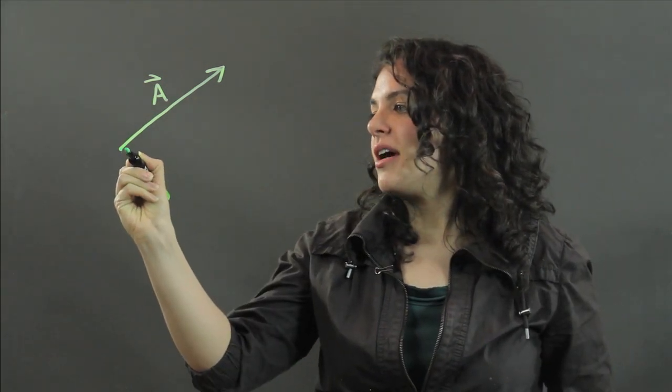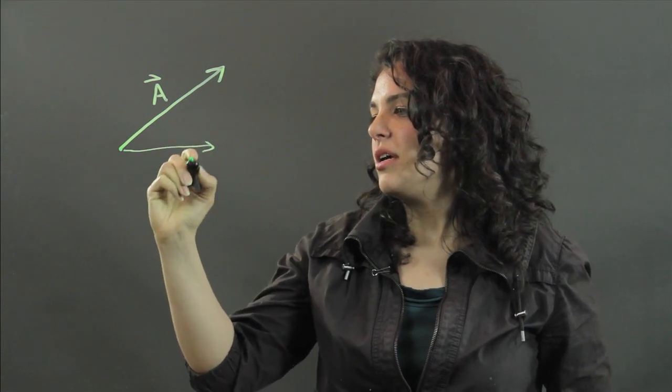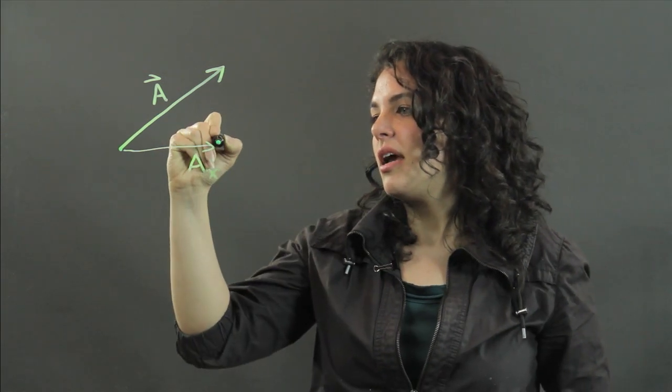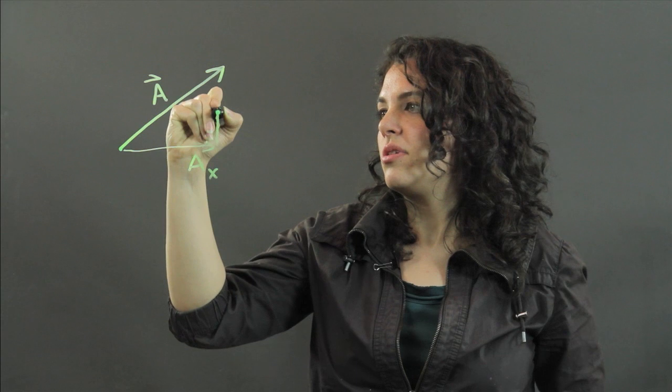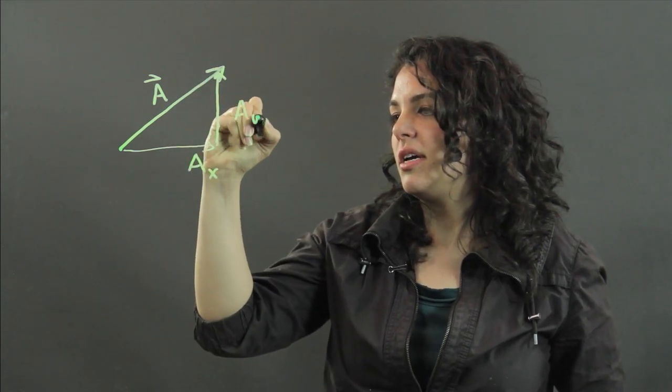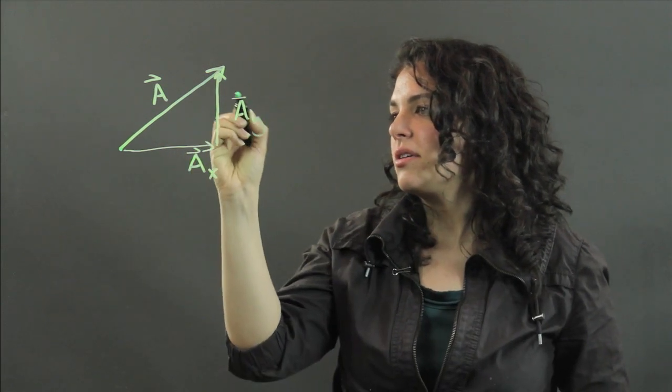If we've broken it down into components, that means we've broken it down into an x component, which I can call A sub x, and we've broken it down into a y component, which I call A sub y. So vector A sub x, A sub y.